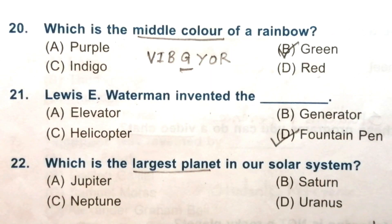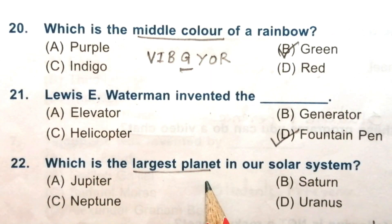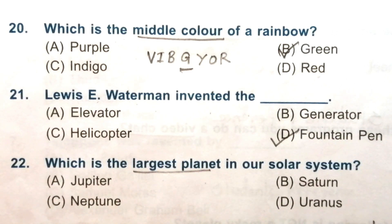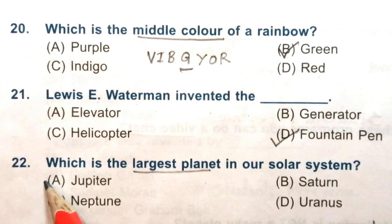Question 22: Which is the largest planet in our solar system? Jupiter, Saturn, Neptune, or Uranus. The answer is A, Jupiter.